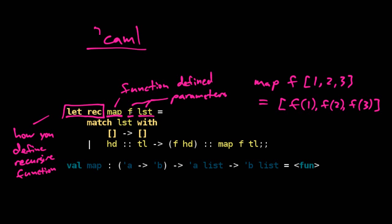So map of F on a list. You match the list. And if the list is the empty list here, then the return value is the empty list. So this is the base case here. If the list has a head and a tail, then the return value is applying the function to the head and recursively calling map on the tail. So this is the recursive part.